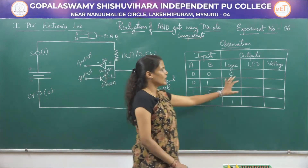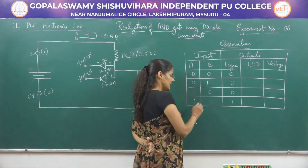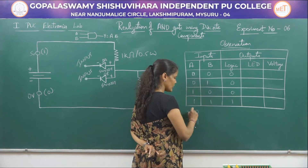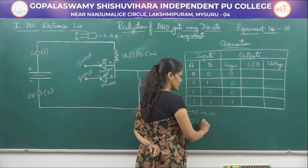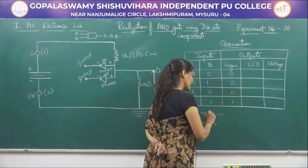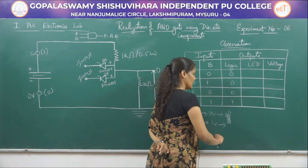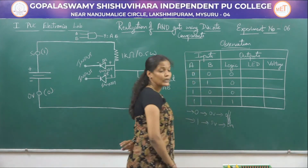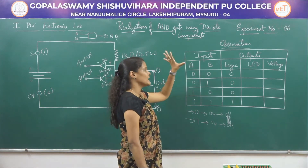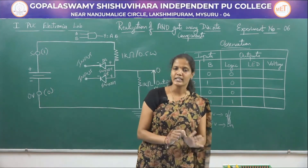We have to check the LED response and the voltage response of this AND gate. For the logical values 0 and 1, the voltage values will be equal to 0 volts and 5 volts. When talking about switches, the switch will be in the off state when the logical value is equal to 0, and when the logical value is 1, the switch will be in the on state. So this is the truth table of the AND gate, and we have to confirm the LED response and the voltage response.